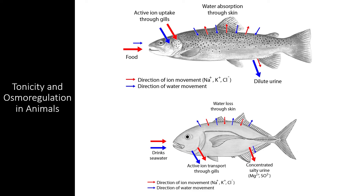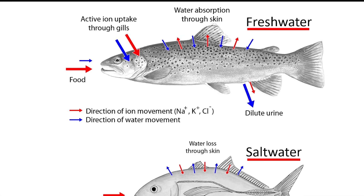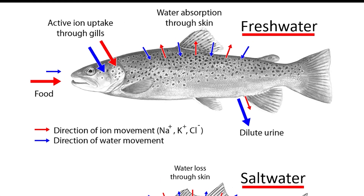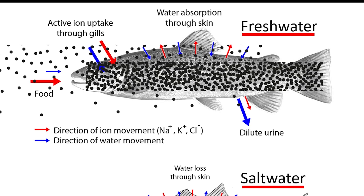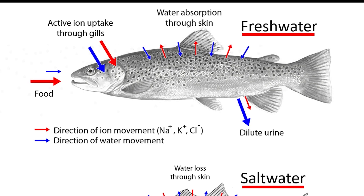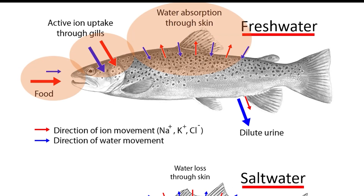Animals deal with different tonicities in different ways, depending on both their evolution and the environment they live in. The freshwater fish has a problem — it lives in a hypotonic environment, meaning the cells in the freshwater fish are much more concentrated than the external environment. Because of the dilute environment it lives in, water is constantly entering the fish through its mouth, gills, and skin. The kidneys of this freshwater fish are constantly removing excess water from its body, creating very dilute urine.